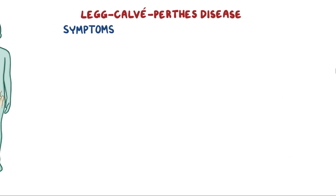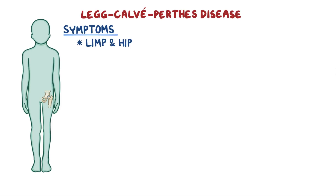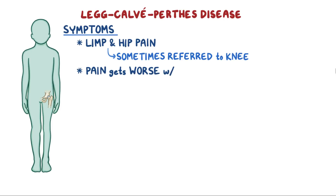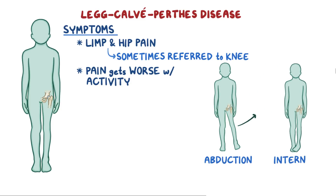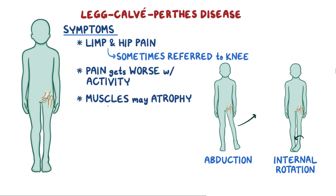Children with Legg-Calvé-Perthes disease develop a limp and hip pain, which is sometimes referred to the knee. The pain usually gets worse with activity, which may make the affected hip very difficult to move. This particularly affects abduction — moving the leg laterally away from the body — as well as internal rotation, which is turning the leg inward. Also, because the affected leg is less used, its muscles may become atrophied, causing the leg to look smaller than the normal one.